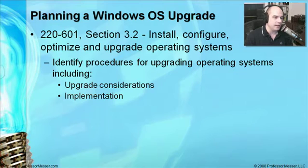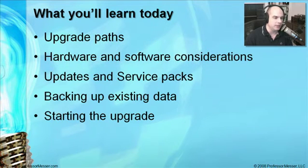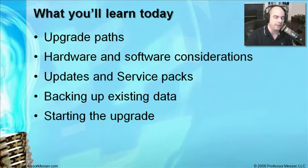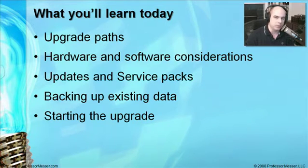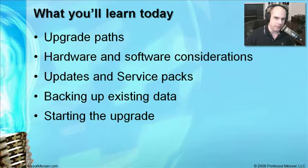We need to know how to install, configure, optimize, and upgrade operating systems. We'll talk about upgrade considerations and implementation, including what the upgrade paths are for a Windows copy you might have — such as whether you can go from Windows NT to Windows 2000 or Windows XP. We'll also discuss hardware and software considerations, updates and service packs, backing up existing data, and finally what you need to do when you're ready to start the upgrade.